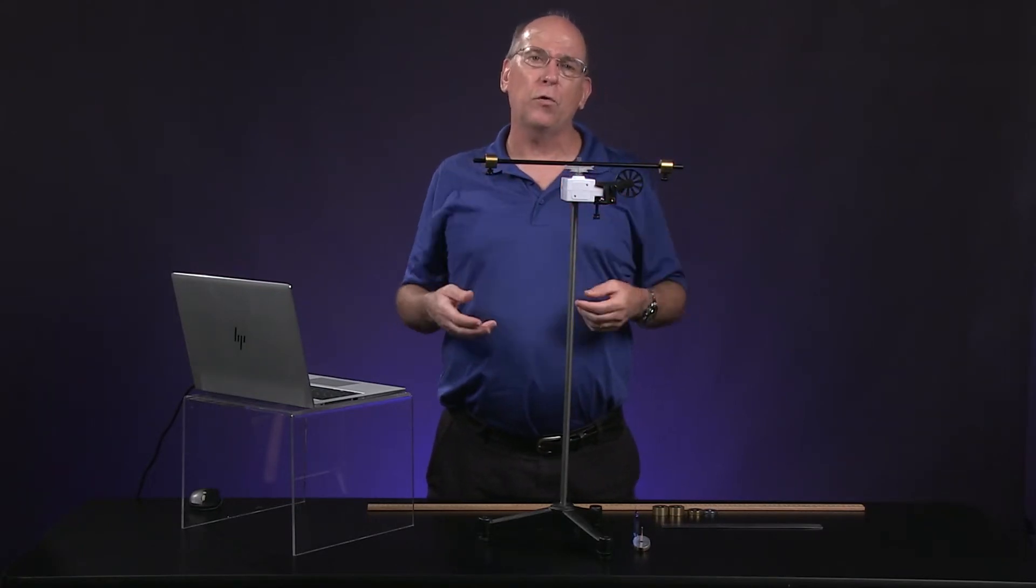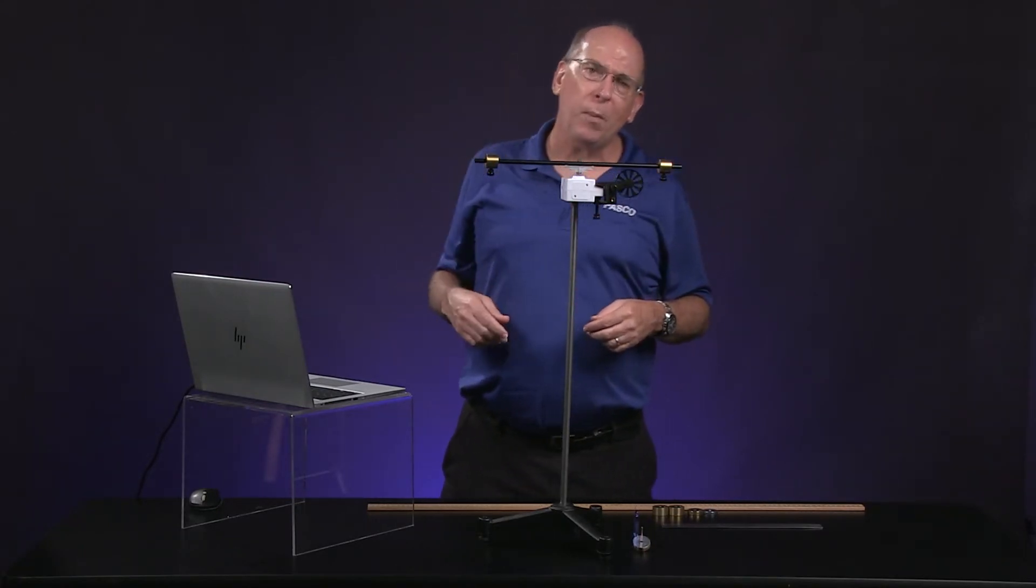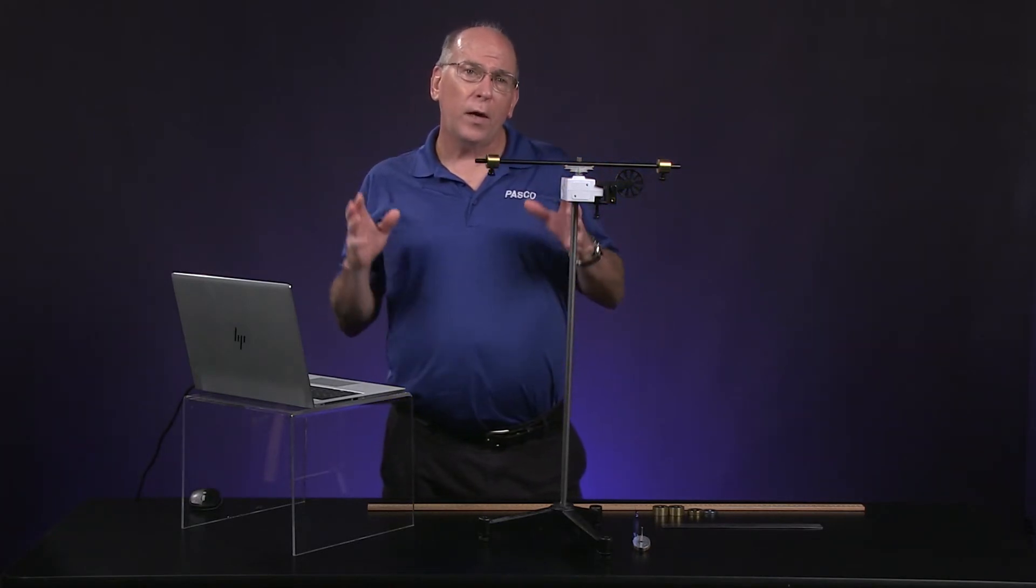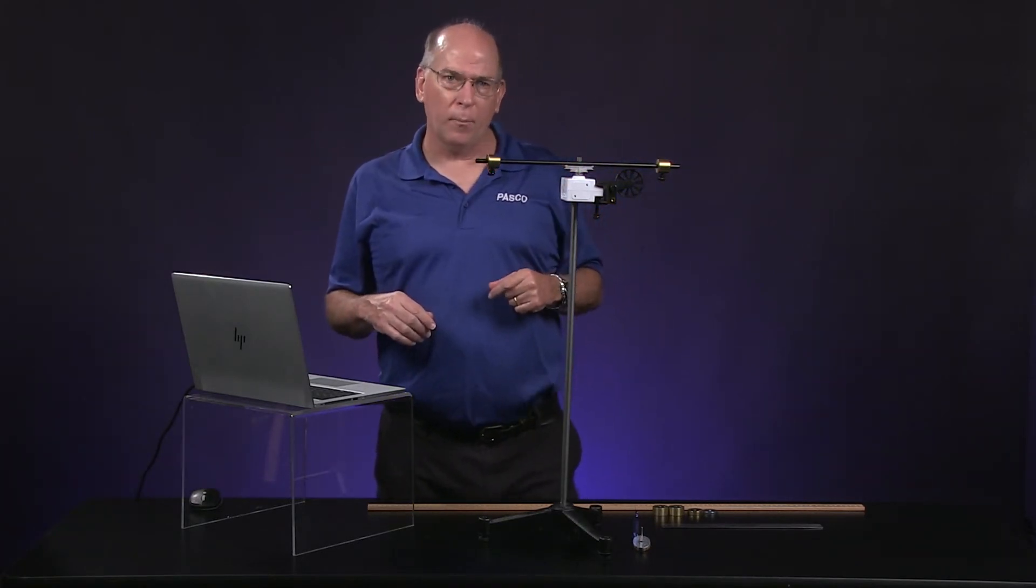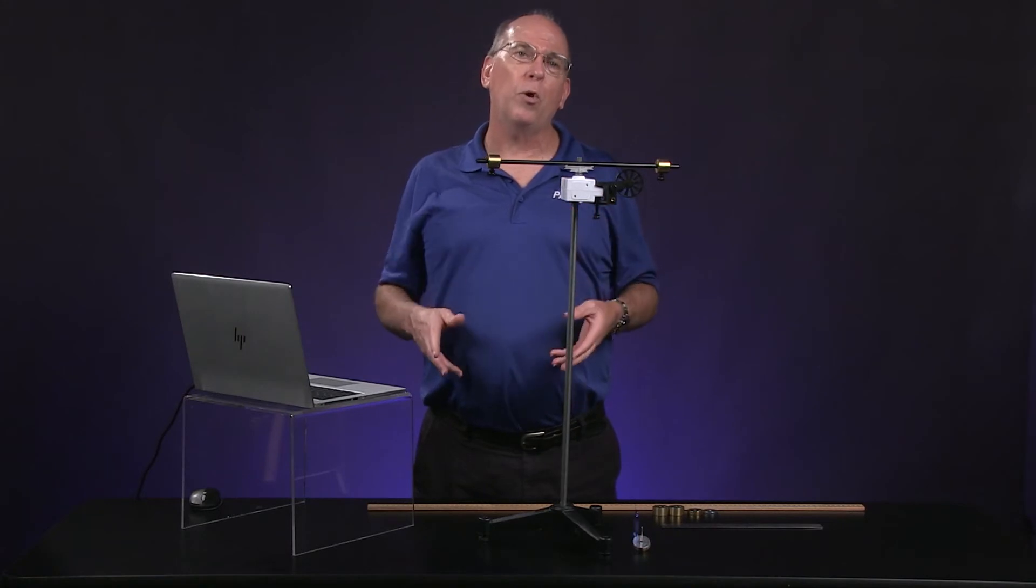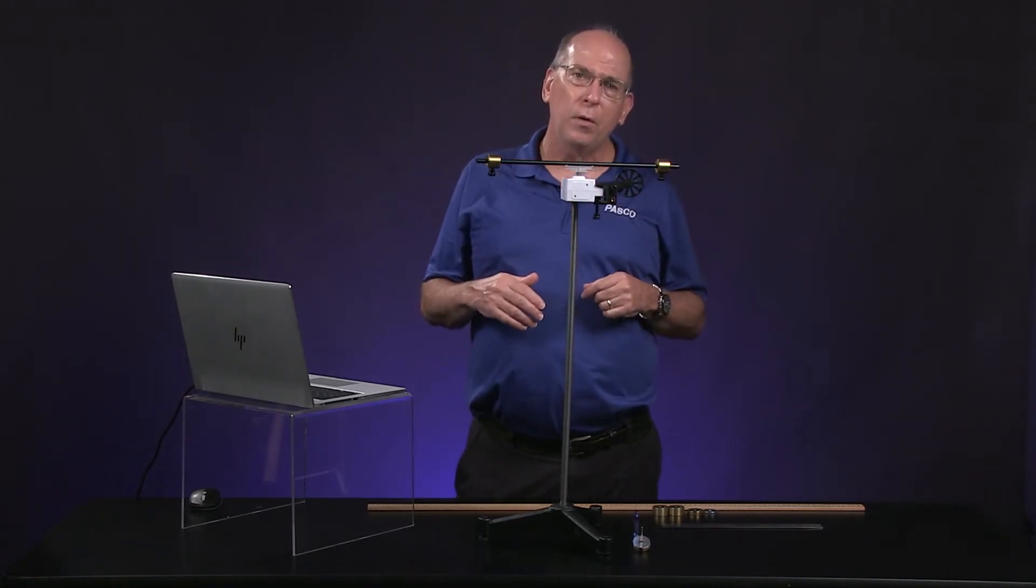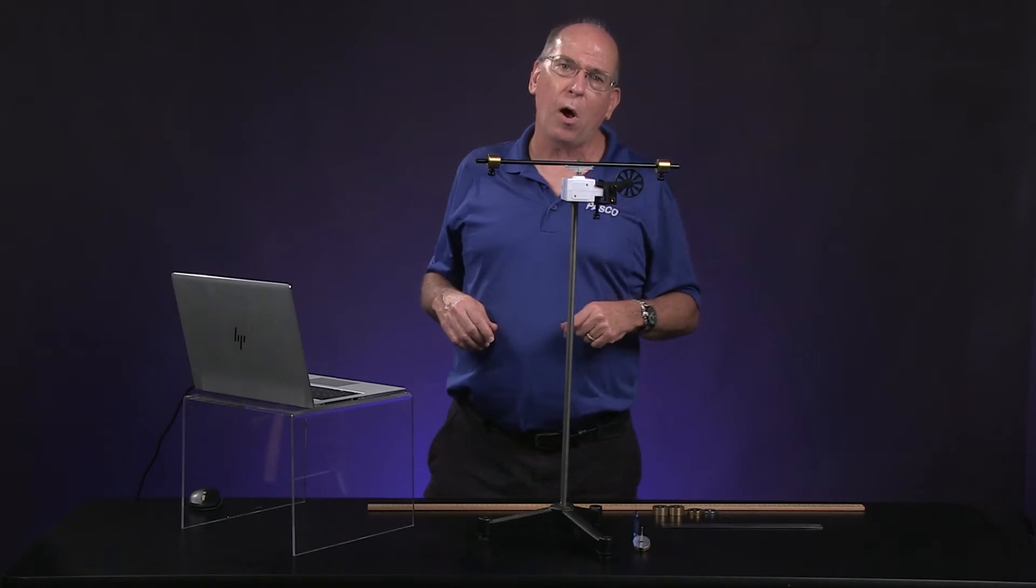We will ignore the mass of both pulleys, the axle and the screw. Their masses and dimensions are so small, they don't have much rotational inertia. We will also neglect any torque from friction in the axle and pulley. Both are very small.